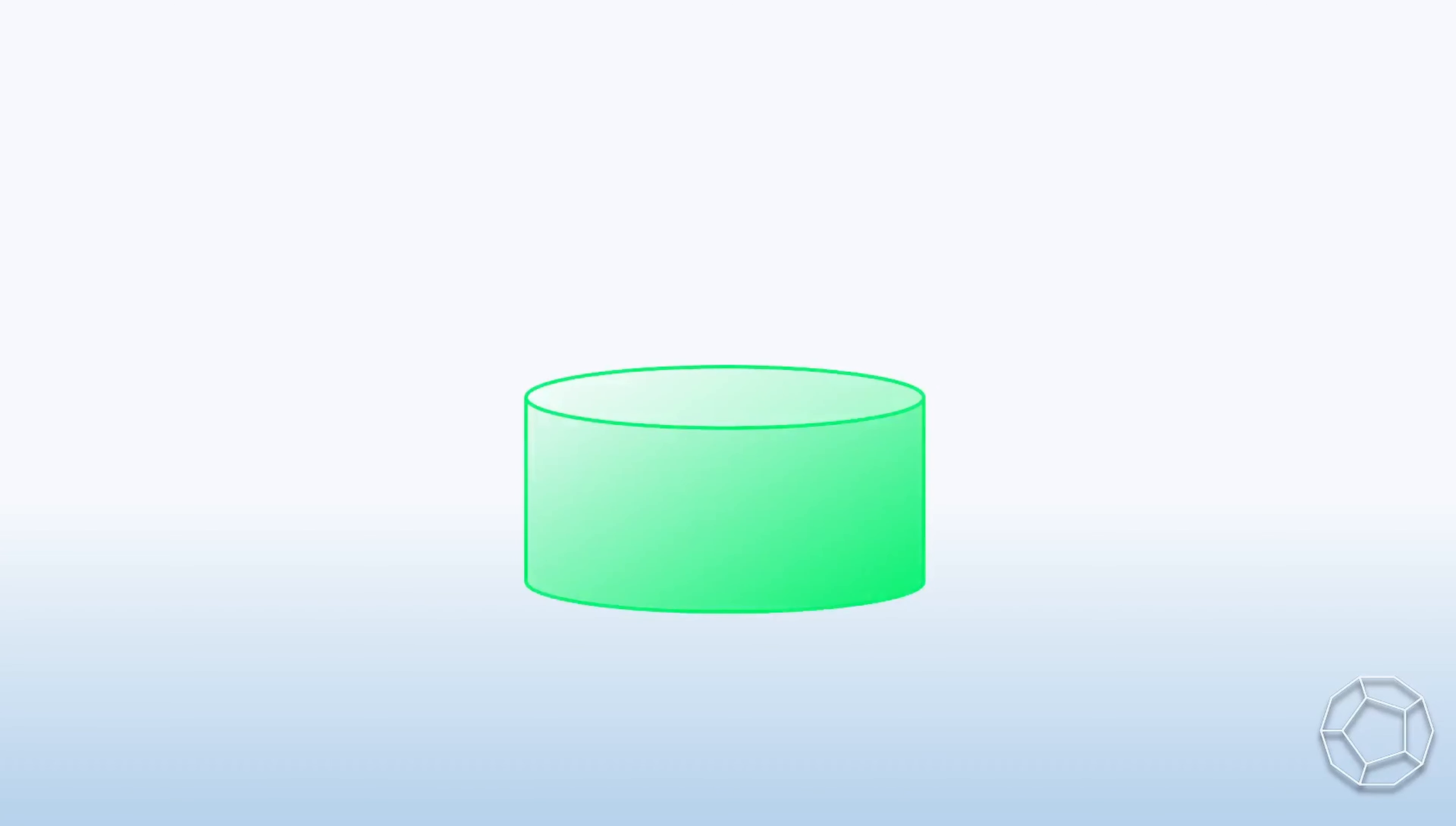A right circular cylinder is inscribed in a sphere, which in turn is inscribed in a right circular cone. The radius of the sphere and the height of the cone are both equal to r, while the height of the cone is equal to 3r.